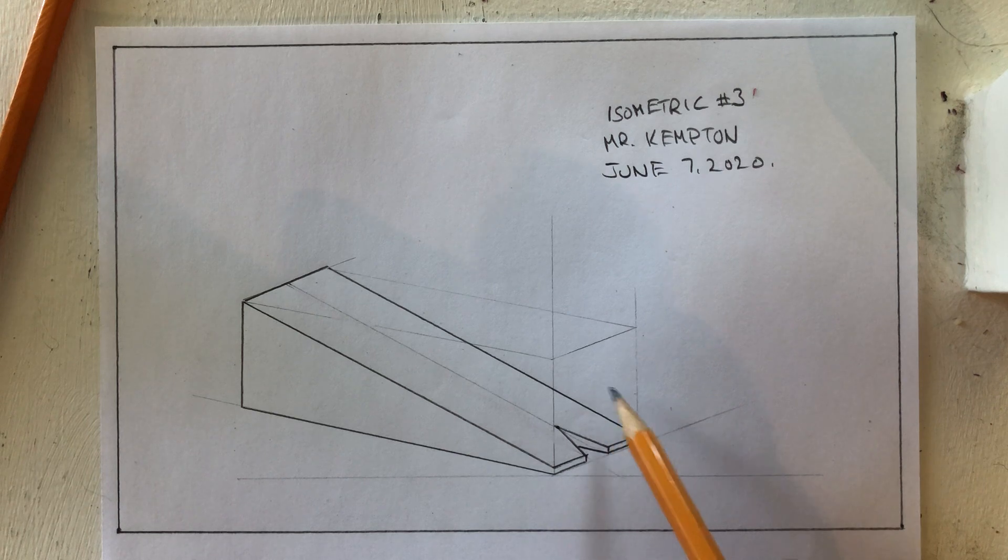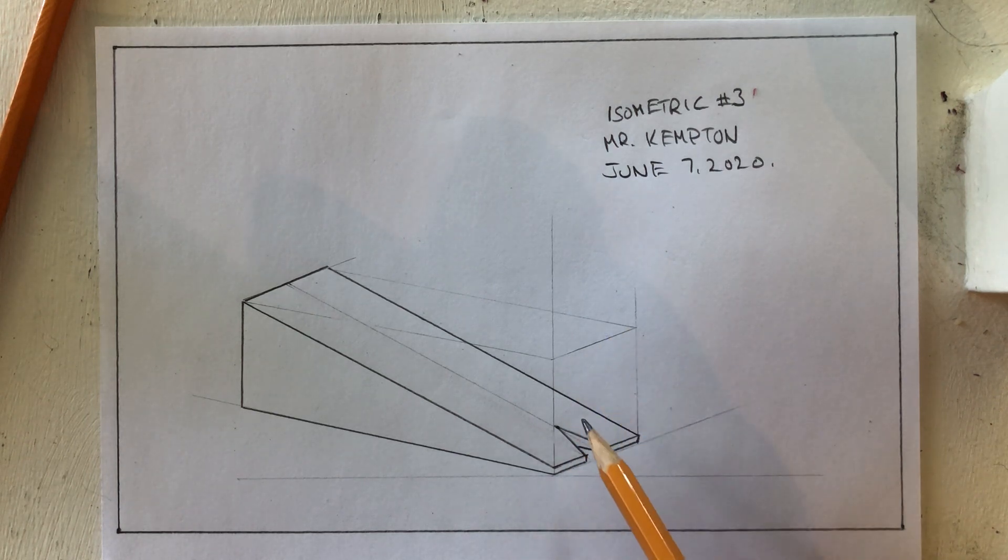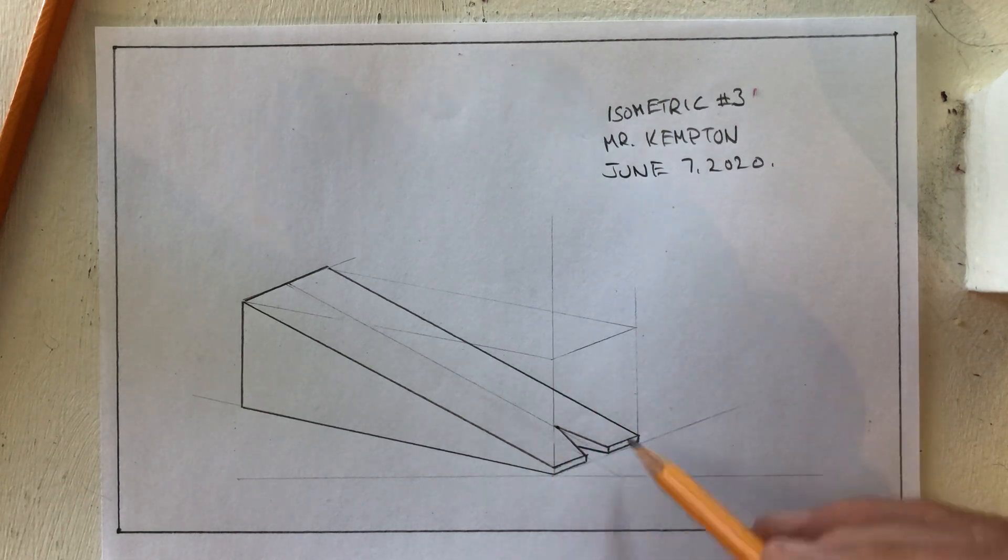So the only trick we had there was this little angle, this face that really wasn't there. But we took care of that by pretending to draw the cube first and then drawing in the details we could see. So there you go, isometric drawing number three.